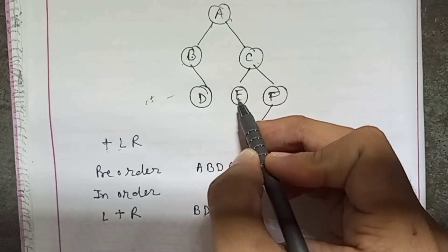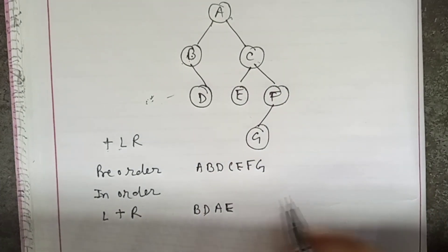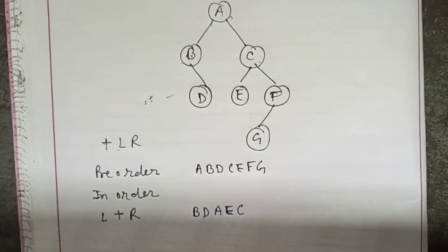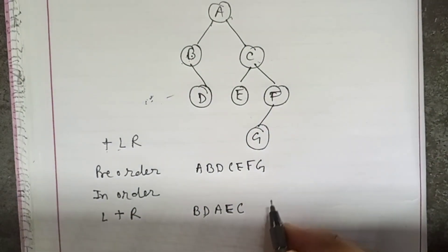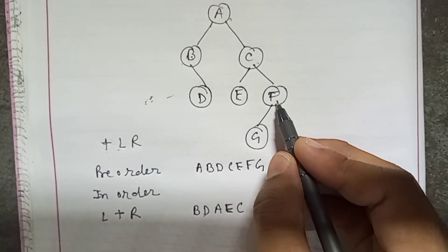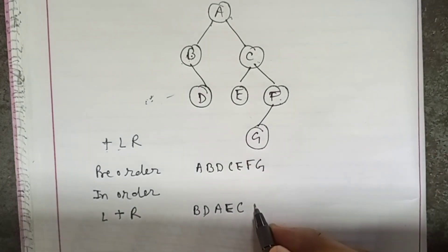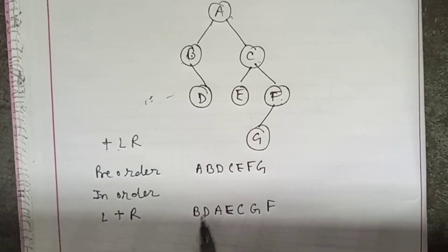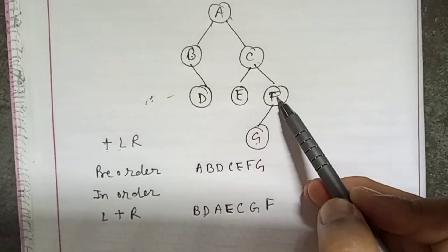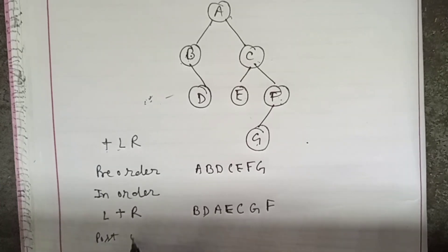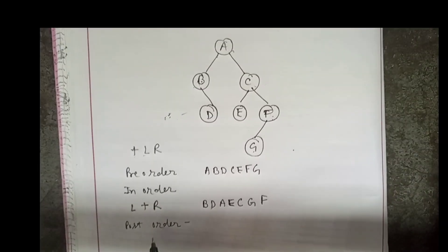Going to the right side of A, which is C — you don't write root immediately, you go for left first. Left is E, so write E. Then root is C, write C. Going for right, F has a child, so we go for left — write G, then F. So in-order gives us: B, A, E, C, G, F. We must always check for children first.